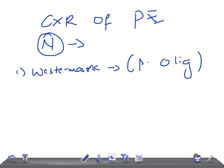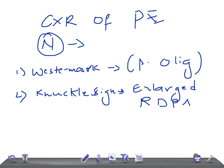The second thing is knuckle sign, also known as Palla's sign. This is an enlarged right descending pulmonary artery. Remember, this is very important, and it's also known as Palla's sign.